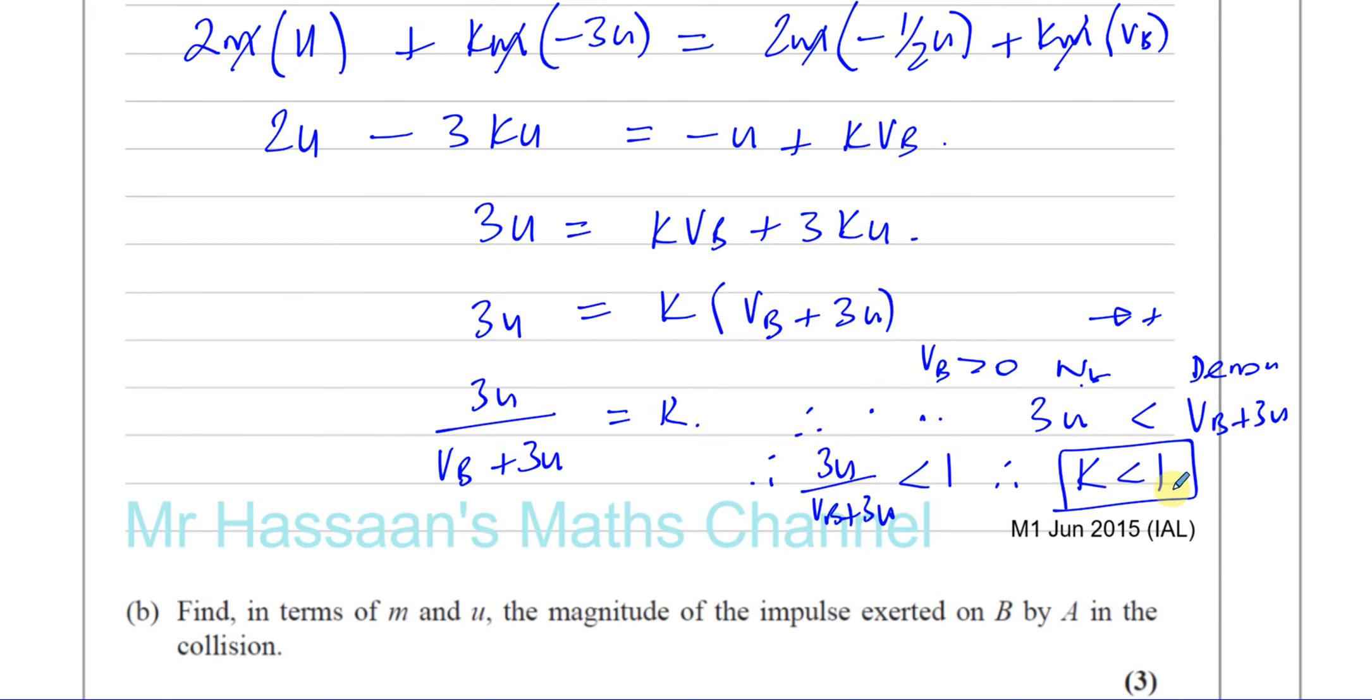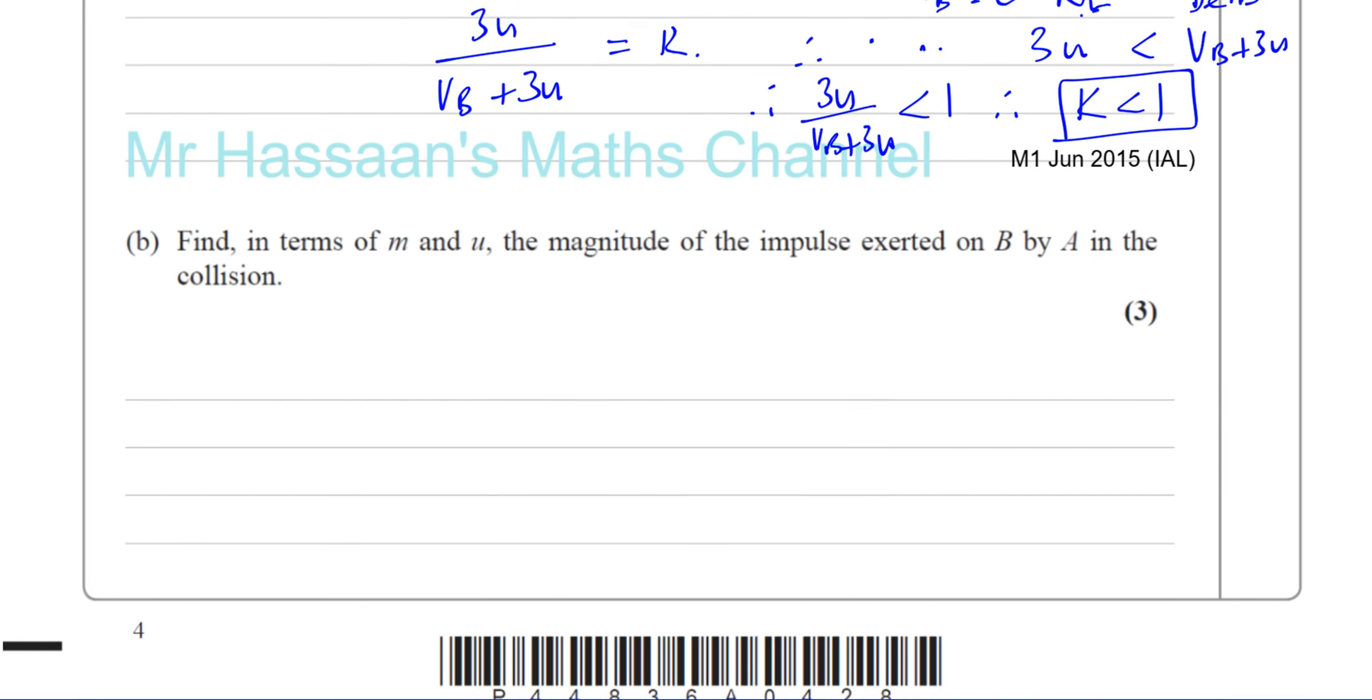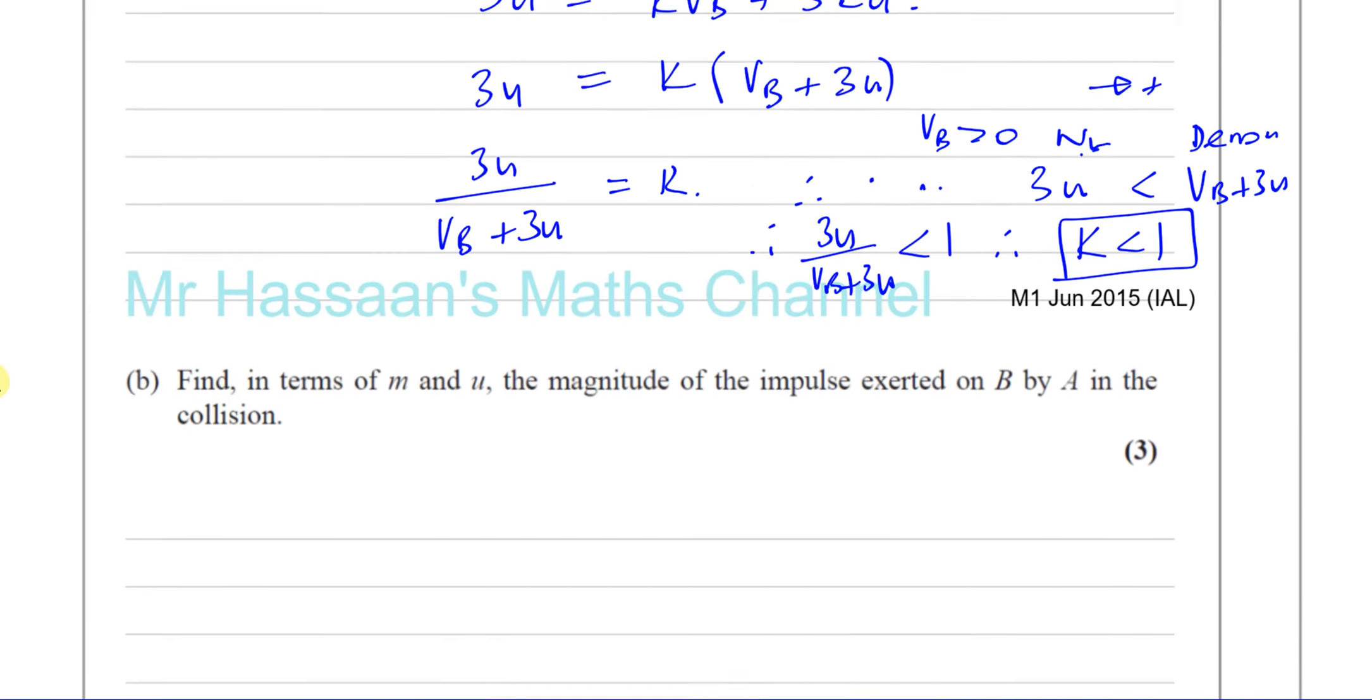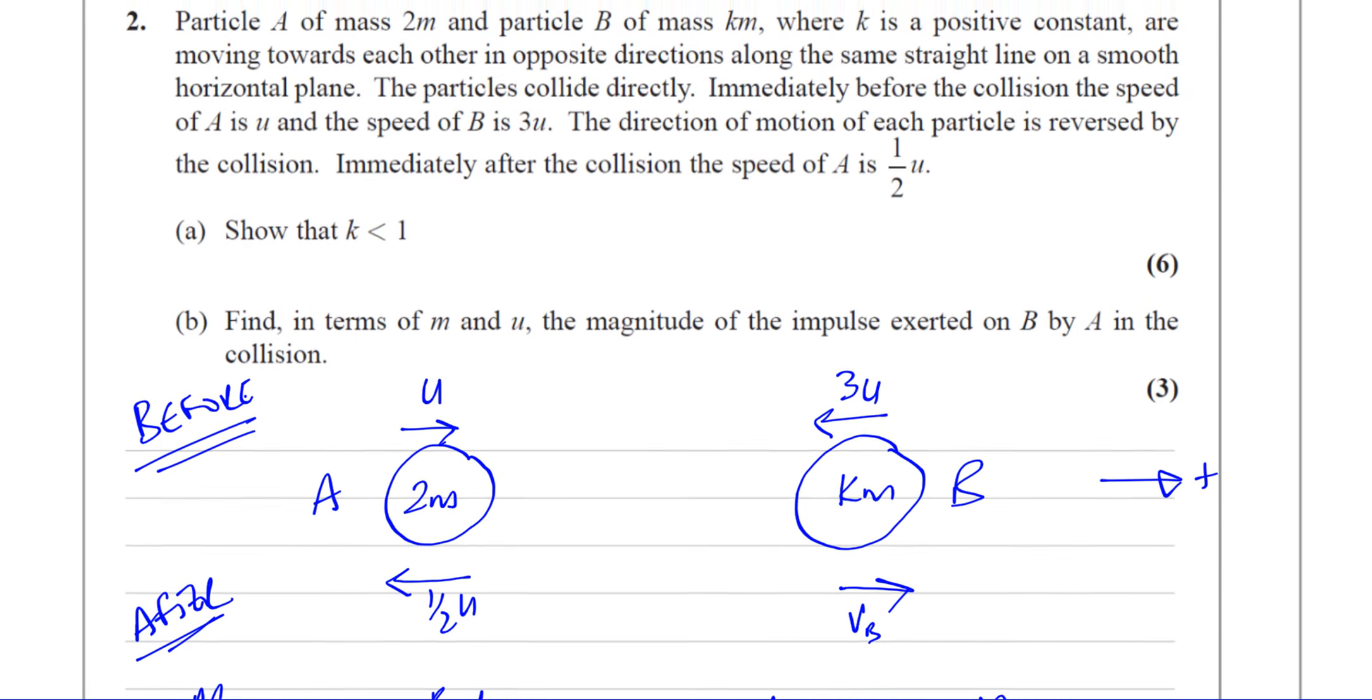So that's a bit of a different type of question, but it's not difficult. Then it says, find in terms of M and U the magnitude of the impulse exerted on B by A. Now, that's pretty simple because we know the change of momentum of A.